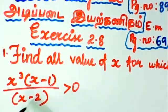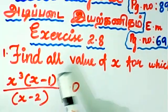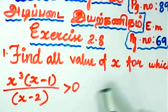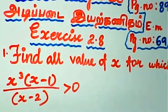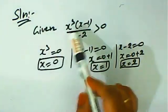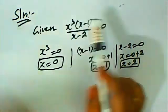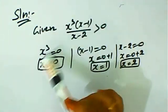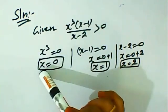We need to find all values of x where x cubed times (x minus 1) divided by (x minus 2) is greater than 0. To do this, we set each factor equal to zero. If x cubed equals 0, then x equals 0.